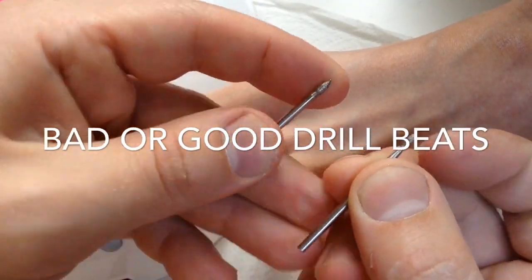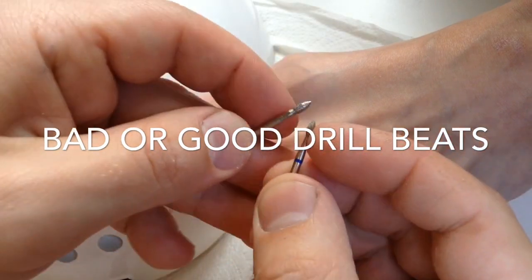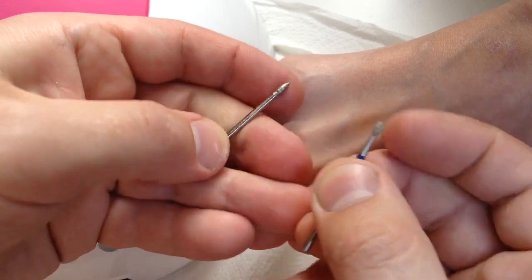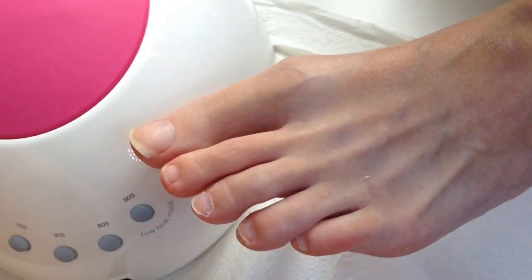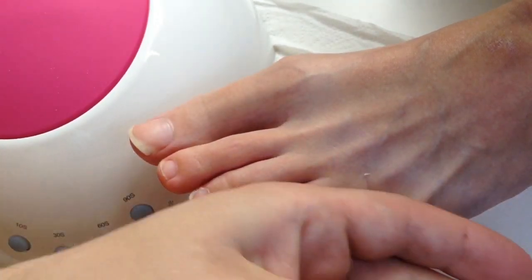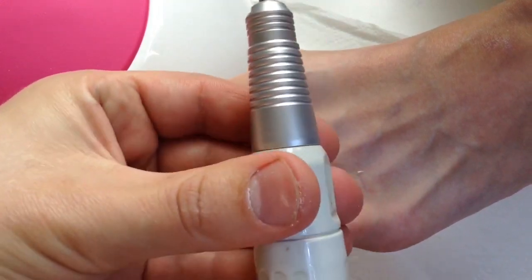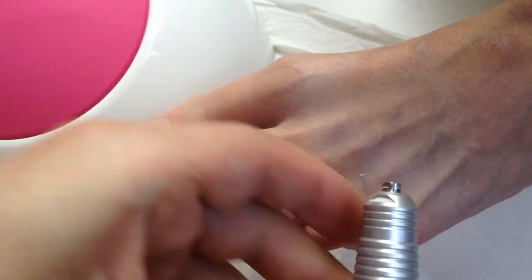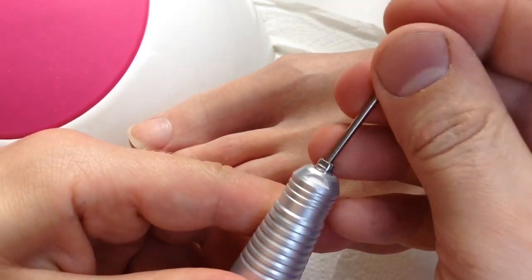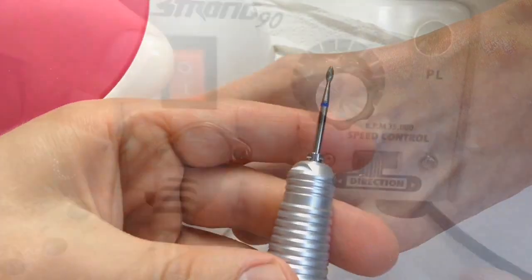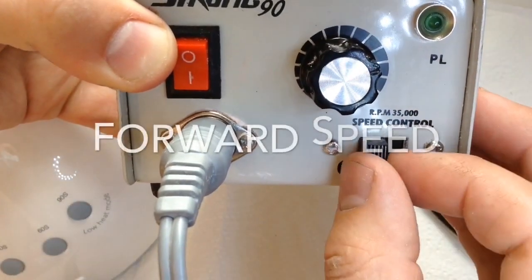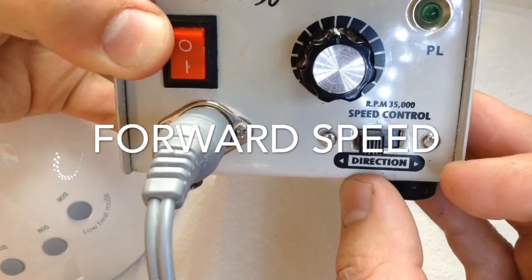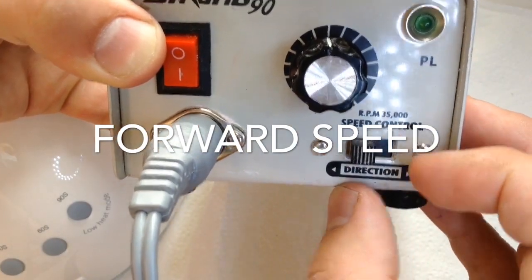I suggest you compare drill beads. On the left side you have a drill bead from a Chinese store, and on the right side with blue line, the professional natural diamond drill bead, which is much better for working because it removes twice as fast and twice as effectively.